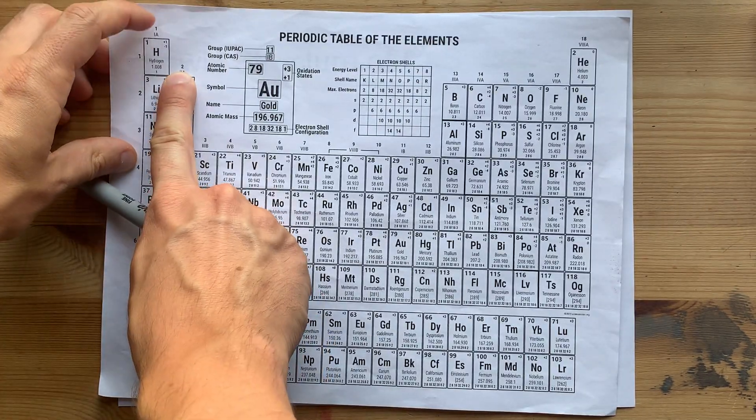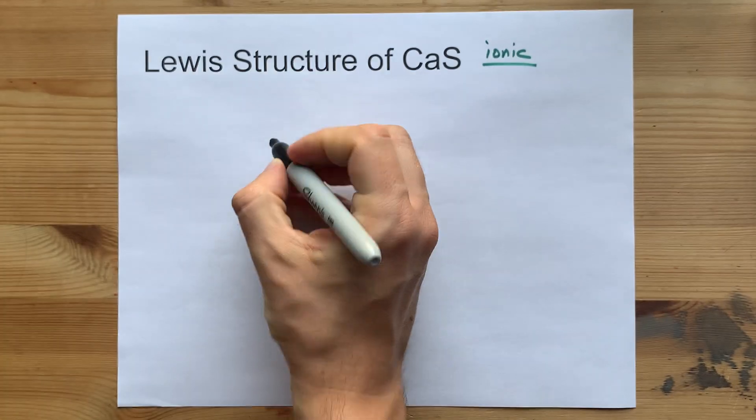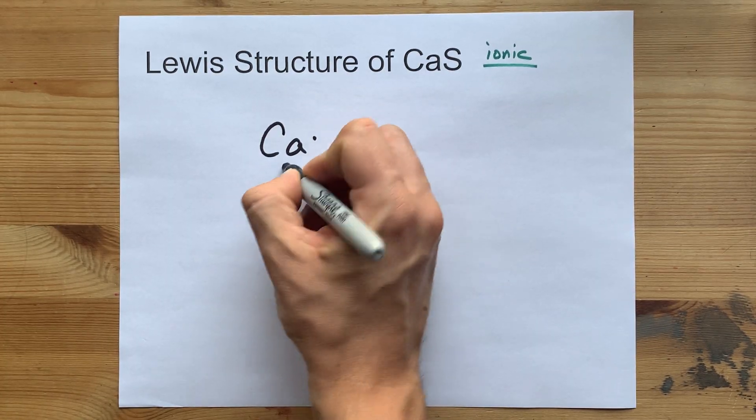Calcium in group two brings two valence electrons with it. Ca 1 2.